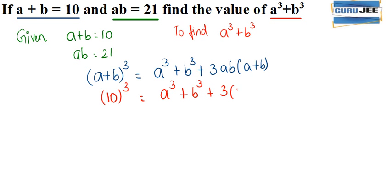Now on solving we will get 10 cube as 1000. So 1000 is equal to a cube plus b cube plus 21 into 3 will be 63 into 10 is 630.